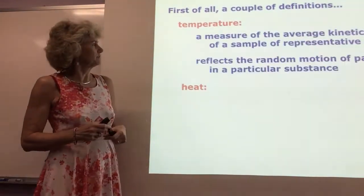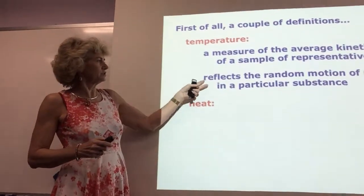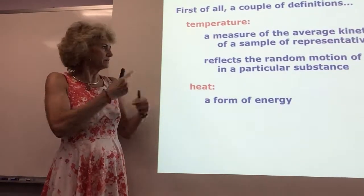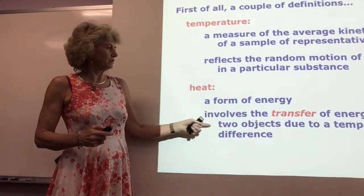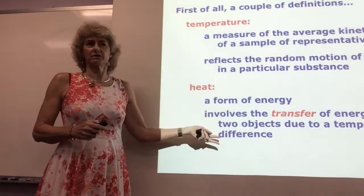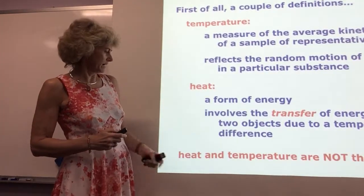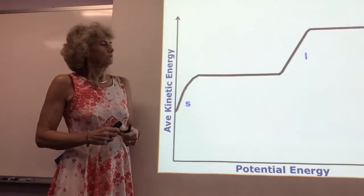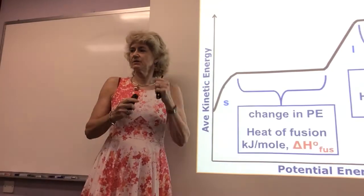So first of all, what does it have to do with this? Temperature, we already talked about this. It's average kinetic energy and it's randomly, things moving randomly. Heat's a form of energy and involves the transfer. This is directly off that other thermal power point that we had. They're not the same. Remember we did this? We can skip this, right? Good.